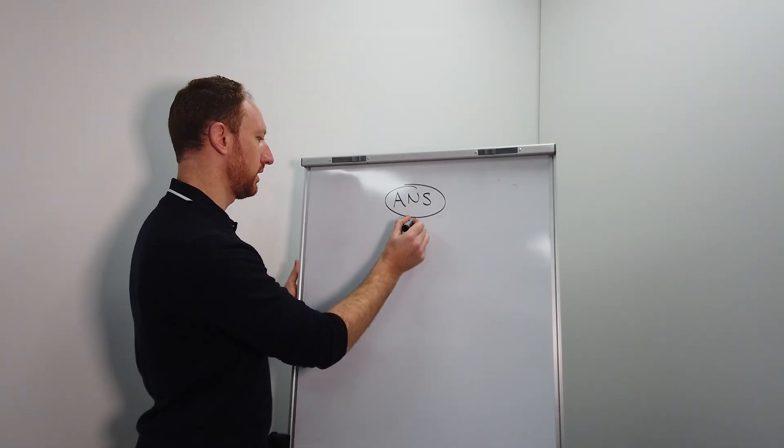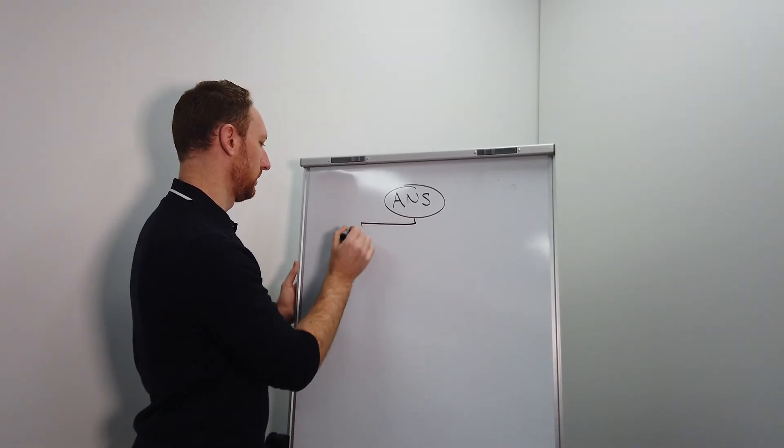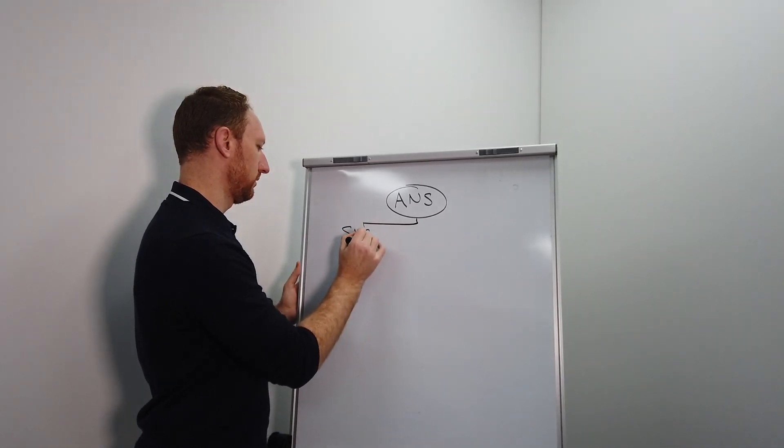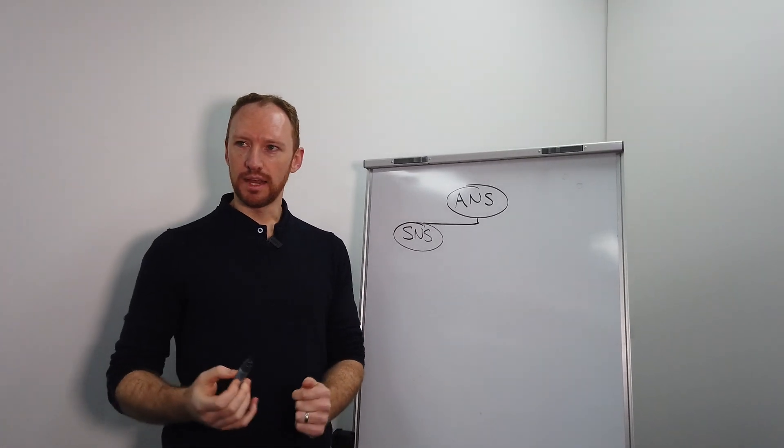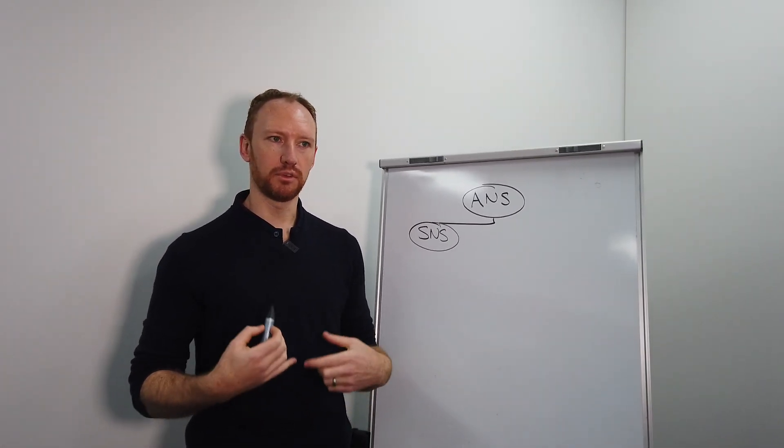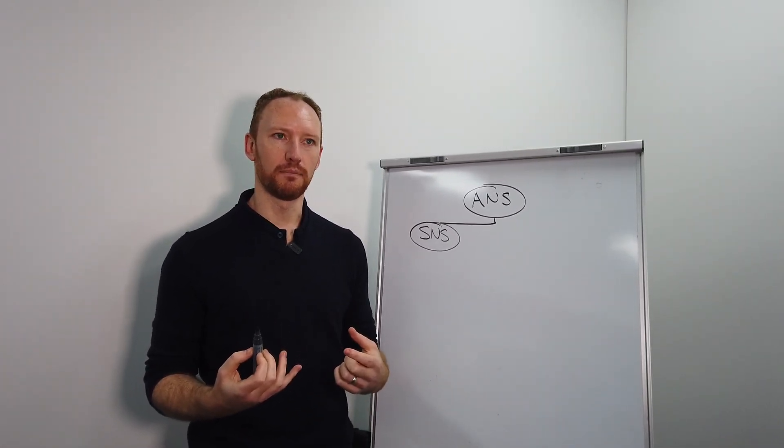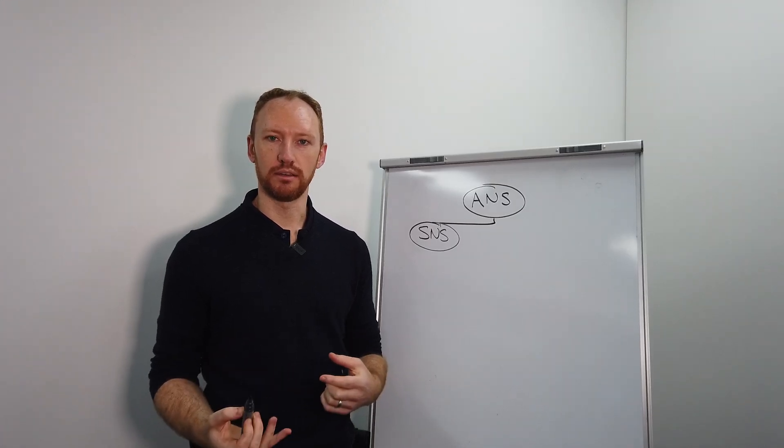The first branch that I'll talk about is the sympathetic nervous system, so I'll just write SNS for short. Our sympathetic nervous system is that nervous system that comes alive in us when there is danger or a threat.